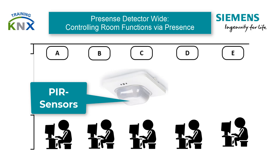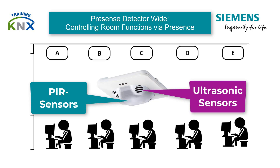In some applications, multiple source evaluation is now required as well, in addition to passive infrared radiation — for example, reflected ultrasound. This double source evaluation was implemented in the type UP258-61.